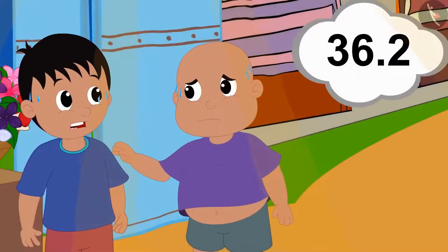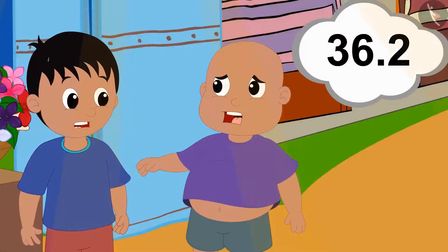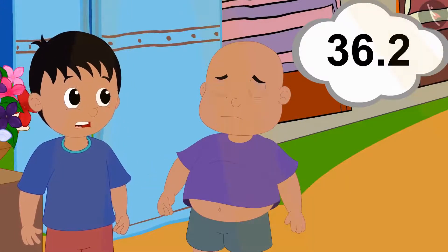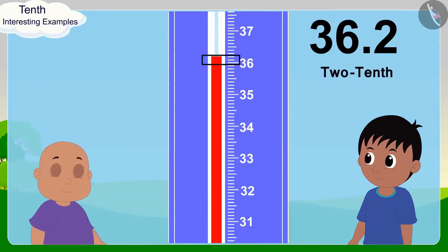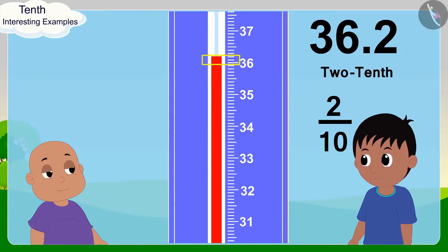Well, if tomorrow's temperature is 36.2 degrees Celsius, then we can say that 0.2 degrees Celsius is 2 tenths of a degree Celsius, or 2 by 10 of a degree Celsius. Yes, Babalu said excitedly.